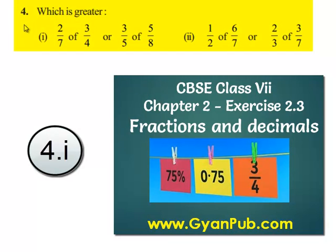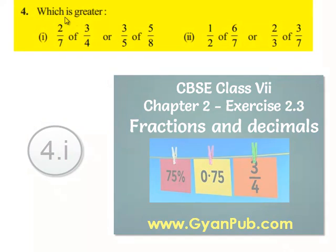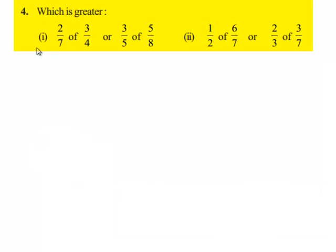Now let us move on to the fourth question. The question is, which is greater? So the first bit is 2 by 7 of 3 by 4 or 3 by 5 of 5 by 8. And the second bit is 1 by 2 of 6 by 7 or 2 by 3 of 3 by 7.